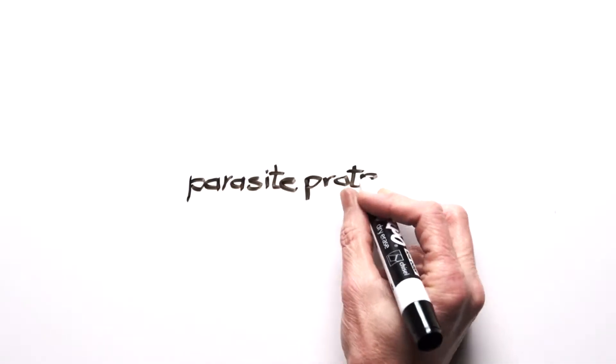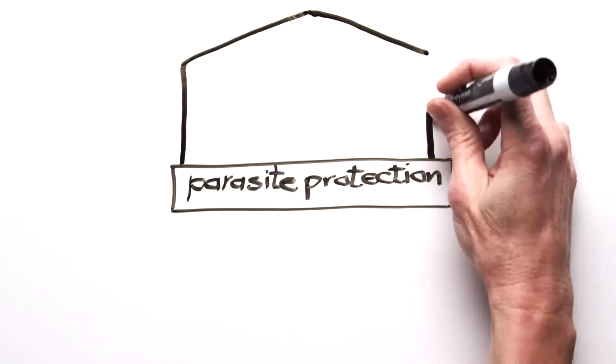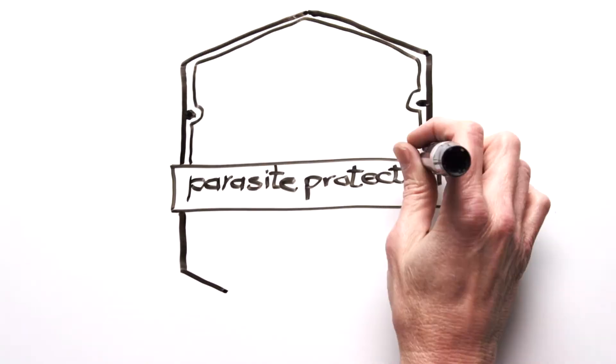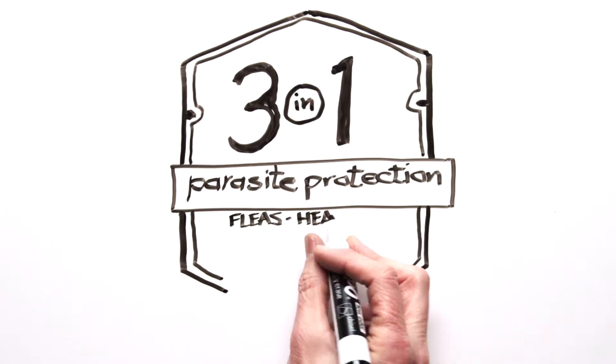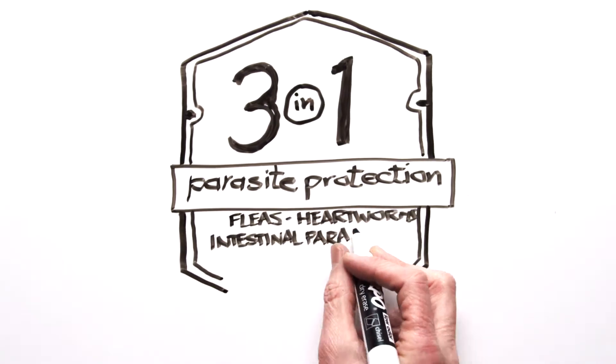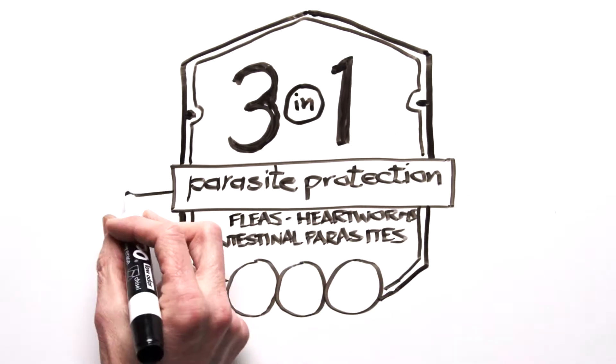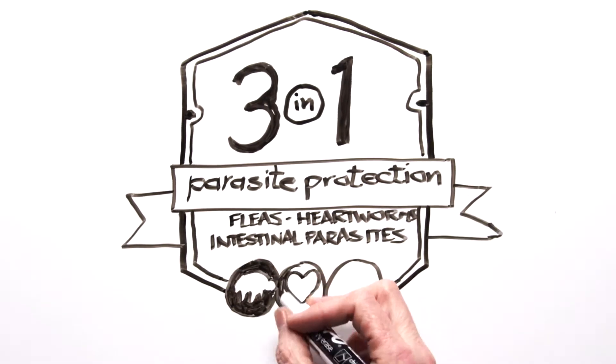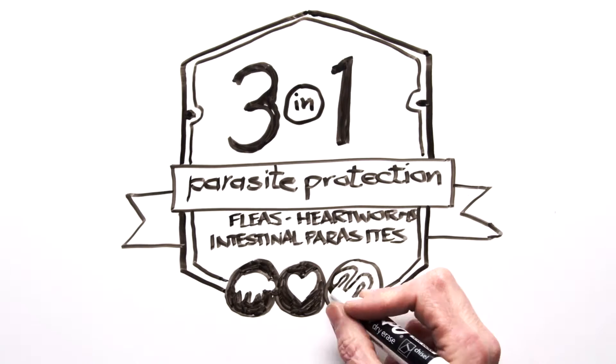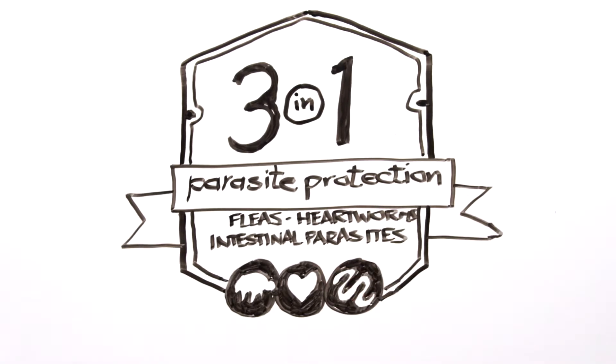Trifexis is indicated for the prevention of heartworm disease, Dirofilaria immitis. Trifexis kills fleas and is indicated for the prevention and treatment of flea infestations, Ctenocephalides felis, and the treatment and control of adult hookworm, Ancylostoma caninum, adult roundworm, Toxocara canis and Toxascaris leonina, and adult whipworm, Trichuris vulpis, infections in dogs and puppies eight weeks of age or older and five pounds of body weight or greater.